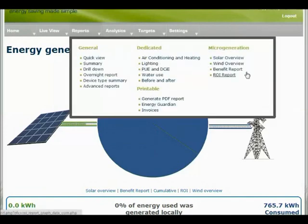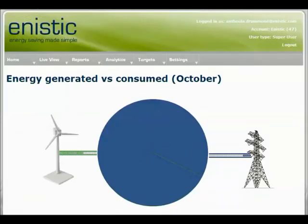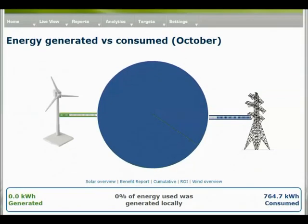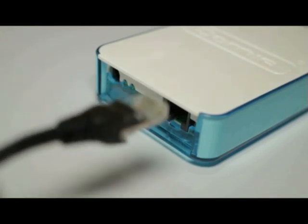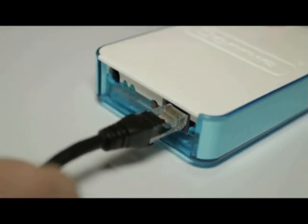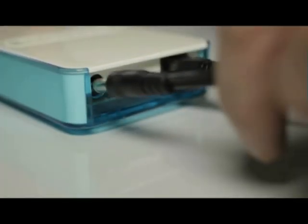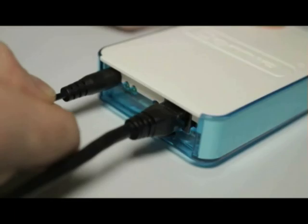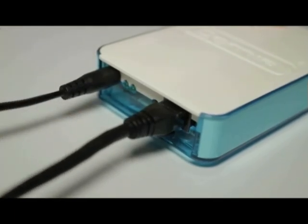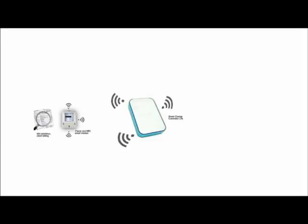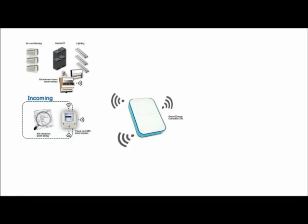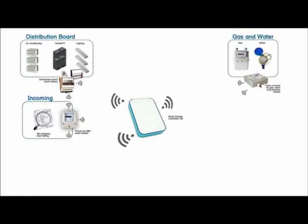What ties together our energy management system is the Unistic Controller. The Unistic Smart Energy Controller acts as a master interface between the Unistic Energy Manager reporting system and other Unistic products. Take a look at our system diagram and see just how our solution works.